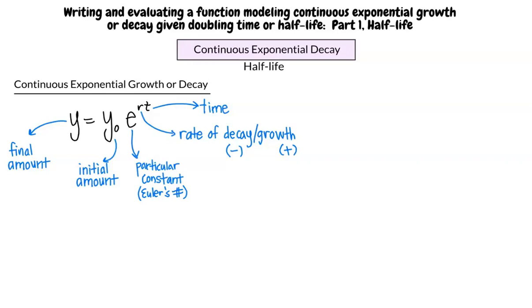In these problems, you will be given information about the half-life or doubling time and the initial amount of a substance. Then you will use this information to solve for the rate of growth or decay, which will require the use of the general formula y equals y-naught e to the rt. That seems tricky. Can we do an example?